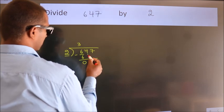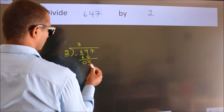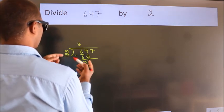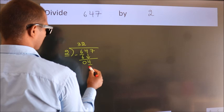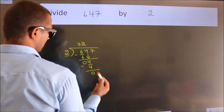After this, bring down the beside number, so 4 down, so 4. When do we get 4? In 2 table, 2 twos, 4. Now, we subtract, we get 0.